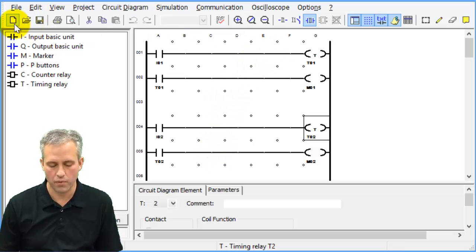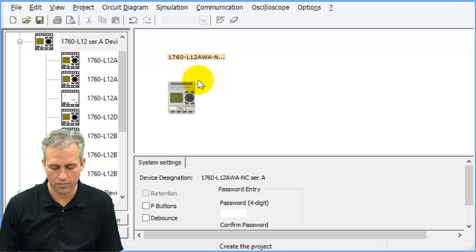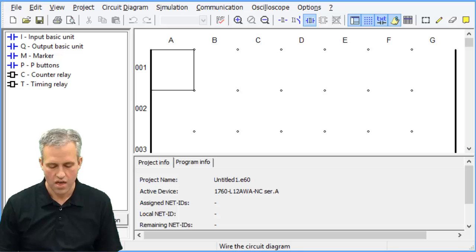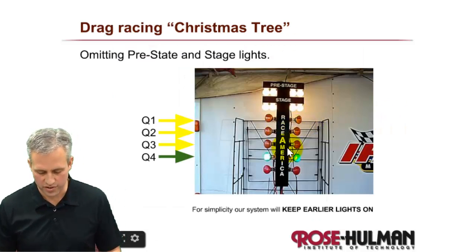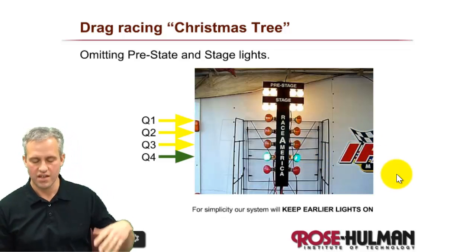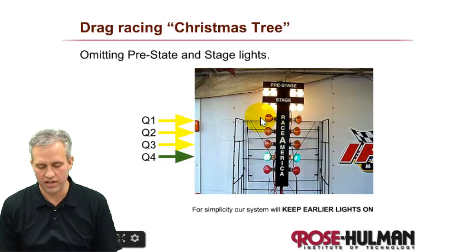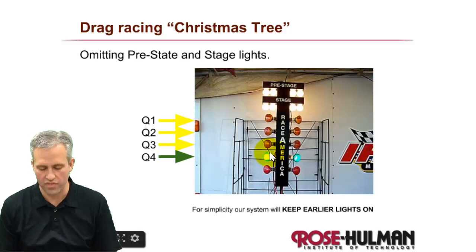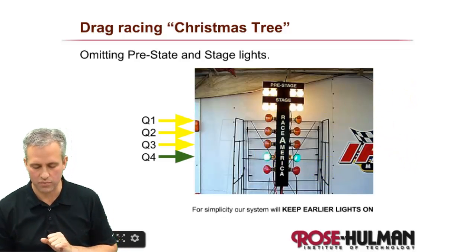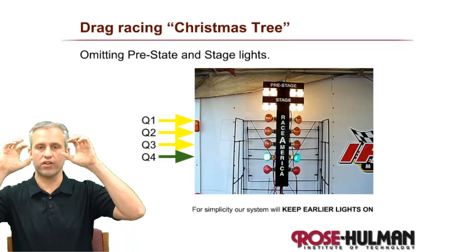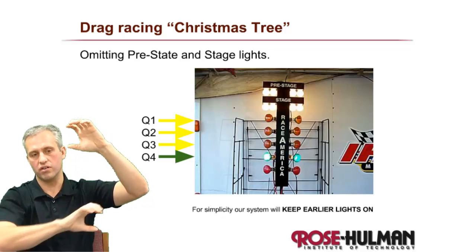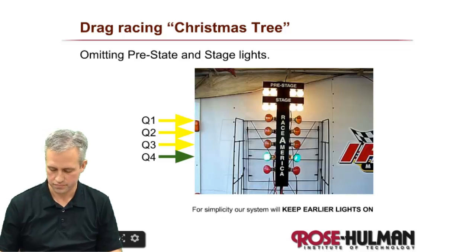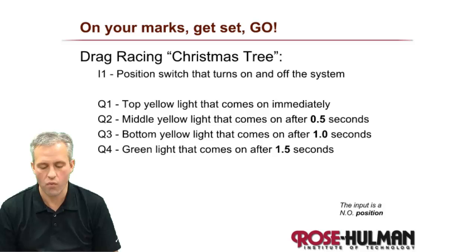Now let's do some example problems. Open a new project and drag the device over. This example is a drag racing Christmas tree. It does the top yellow light, then the middle one, then the bottom yellow light, then turns to green. We're not worrying about stage and pre-stage, and we'll just turn each light on and leave it on, rather than turning it on and off.